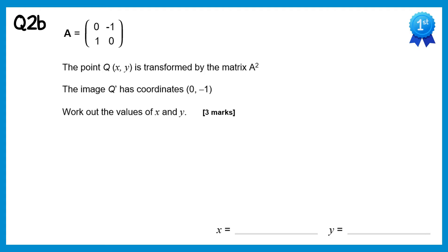For the next part of this question we're now transforming by the matrix A squared. So we better work that out first. A squared is A times A again. We do (0,-1) times (0,-1), which is 0, then (0,-1) times (1,0), which is 0, (1,0) times (0,-1), which is 0, and (1,0) times (1,0), which is negative 1. So we now have the matrix A squared.